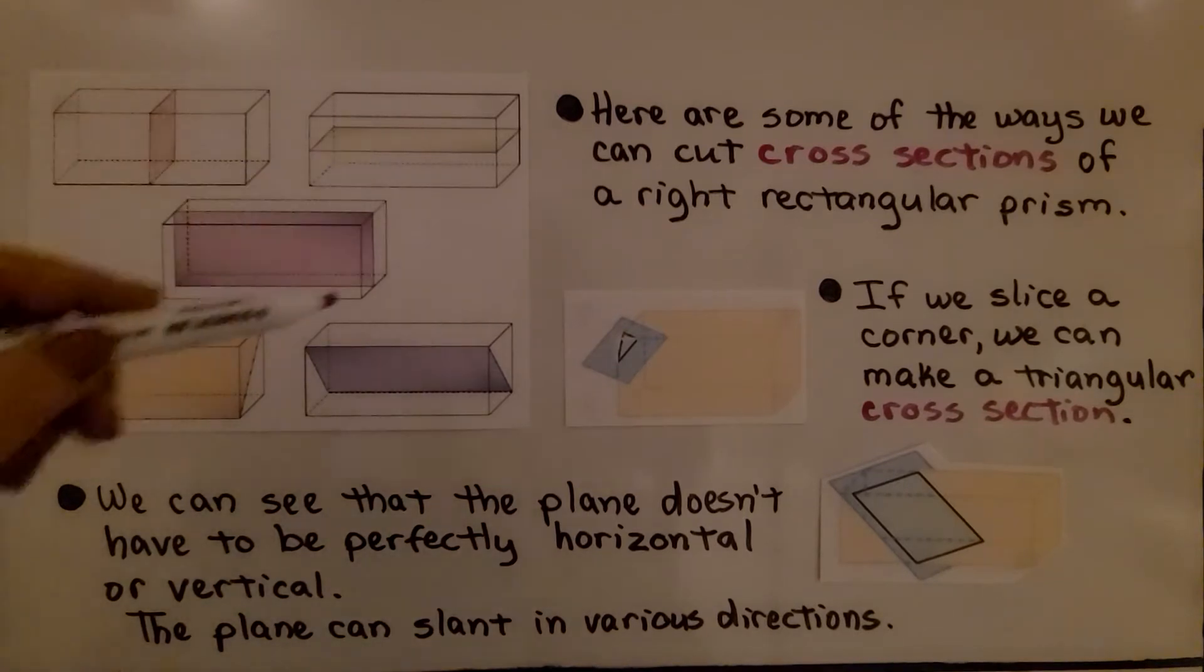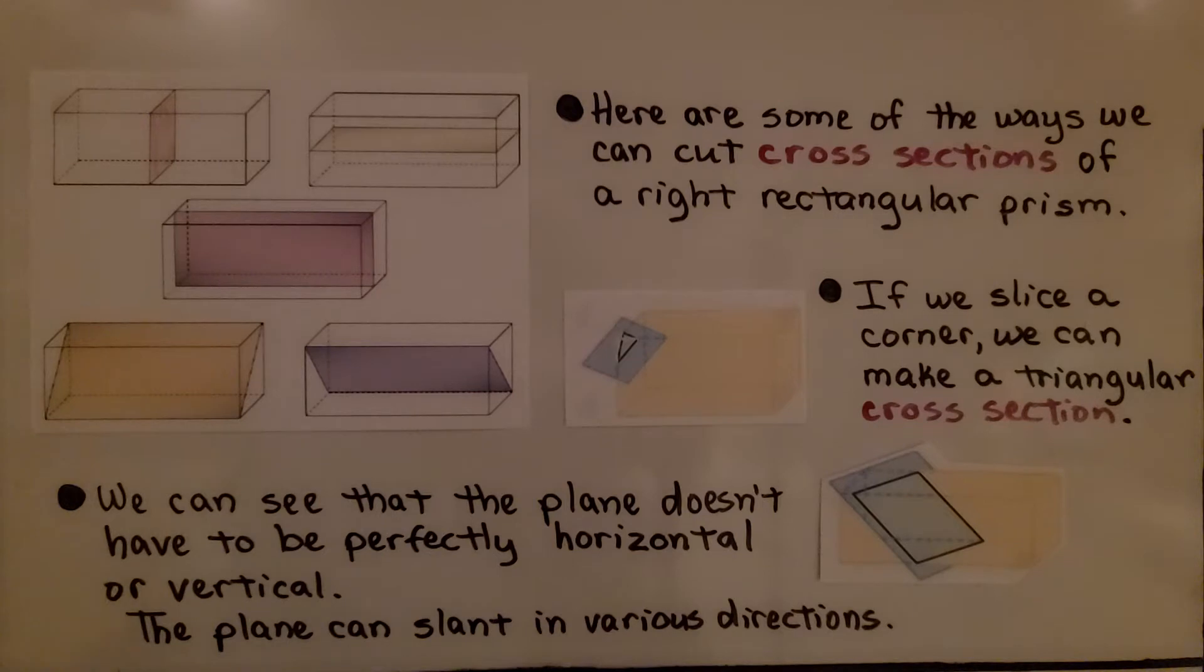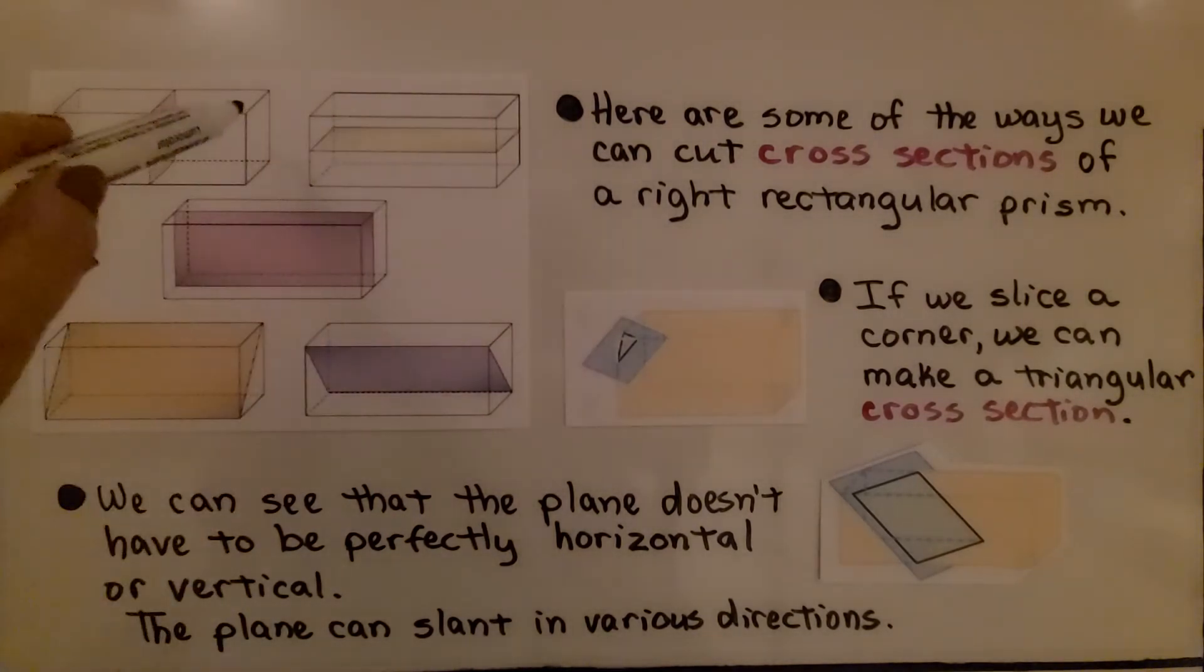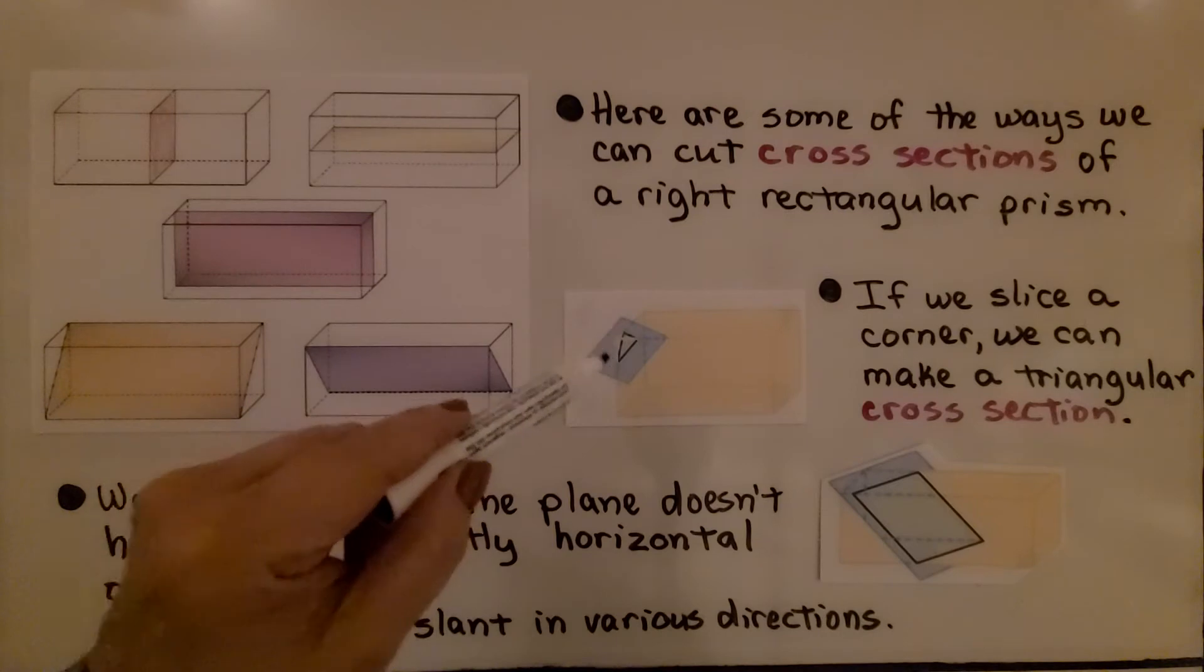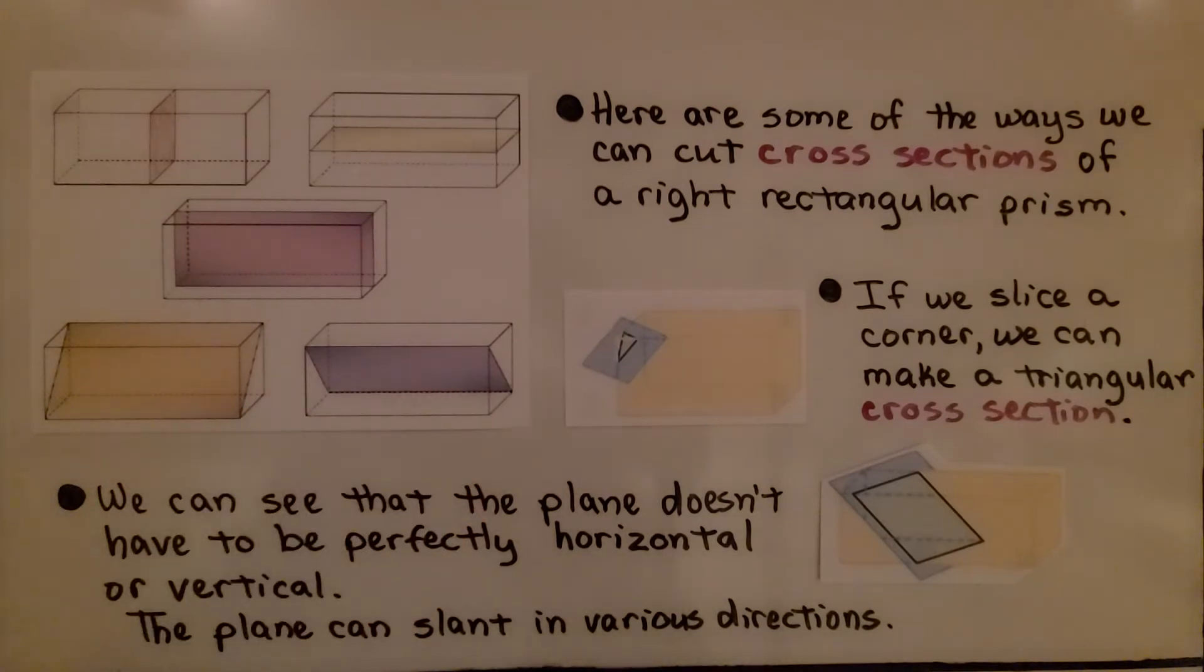Here we have right rectangular prisms. And here are some of the ways we can cut cross sections of a right rectangular prism. We can cut it vertically this way. We can cut it horizontally. We can also cut it vertically this way, or on a slant this way, or on a slant that way. We can even cut off a corner and make a triangular cross section. We can see that the plane doesn't have to be perfectly horizontal or vertical. The plane can slant in various directions.